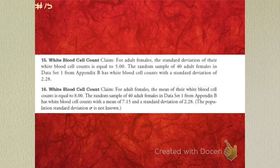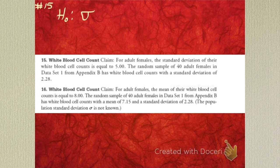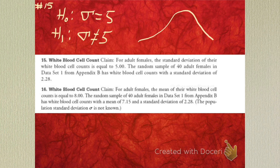Number 15. The claim for adult females: the standard deviation of their white blood cell counts is equal to 5.0. So what's my null? It's sigma — the standard deviation. Sigma equals 5. So our alternative: what's not 5? Sigma is not equal to 5. That's going to be two-tailed because it could be wrong to the low and wrong to the high — it could be higher, or it could be lower.